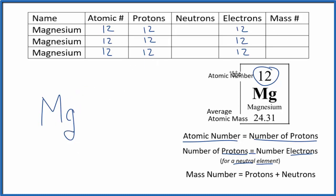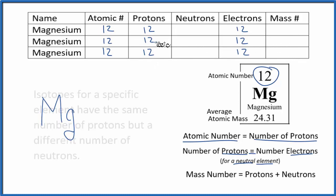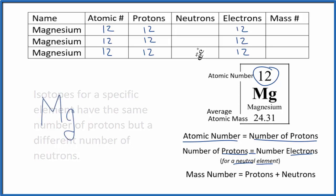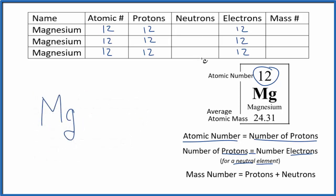We have all of the information except neutrons and mass number. When we talk about isotopes, the protons, electrons, and atomic number are all the same for isotopes — it's the neutrons that are different. Different isotopes have different numbers of neutrons, and since protons plus neutrons give us the mass number, they'll have a different mass number too.